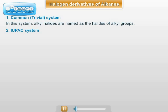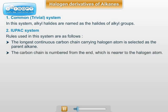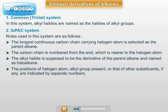In the IUPAC system, the following rules are followed. Rule number one: the longest continuous carbon chain containing the halogen atom is selected as the parent alkane. Rule number two: the carbon chain is numbered from that end which is nearer to the halogen atom. Rule number three: the alkyl halide is considered the derivative of the parent alkane and named as a haloalkane. Rule number four: the position of the halogen atom and alkyl groups, if any, are indicated by separate numbers.